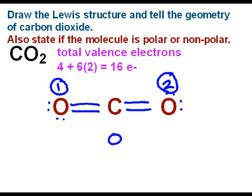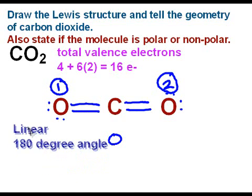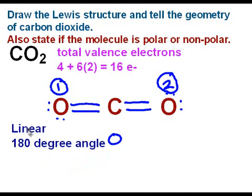So if our pattern is two bonded, zero lone pairs, that will give it a linear shape. We have a 180 degree bond angle between the oxygen, carbon, and the other oxygen.